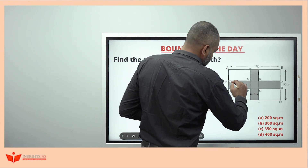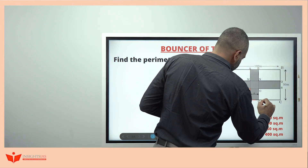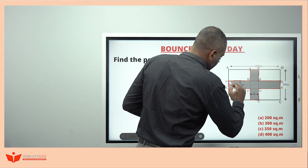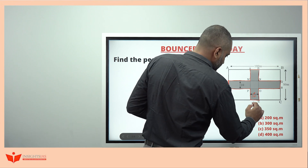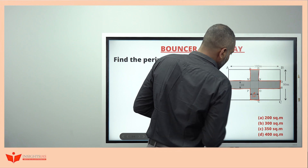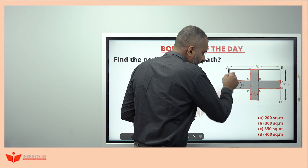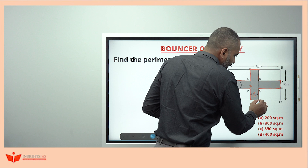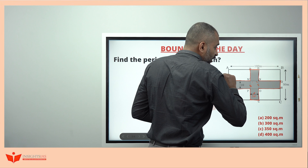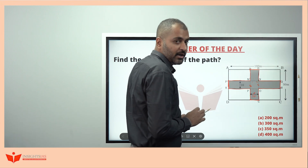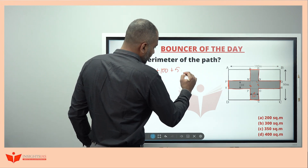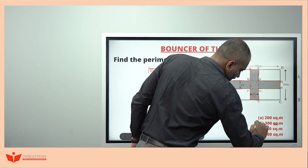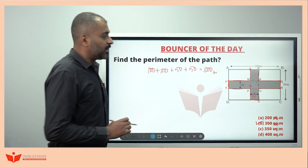Now for yesterday's bouncer question: find the perimeter of the path. The perimeter is the total length of the boundary. Each segment is 10 units. If you take the horizontal segments and align them, you get complete lines of 50 each. Rearranging: 100 + 100 + 50 + 50 = 300. So the perimeter is 300 meters.